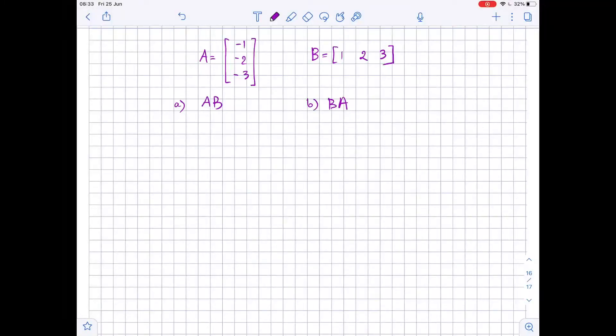Given matrix A and matrix B, we need to find matrices AB and BA if possible.